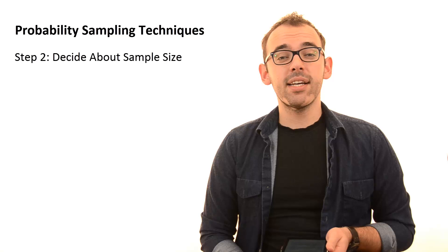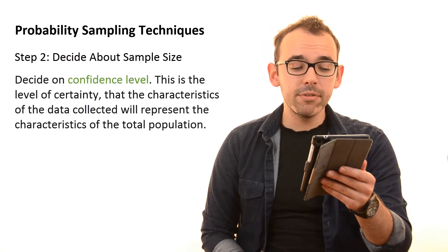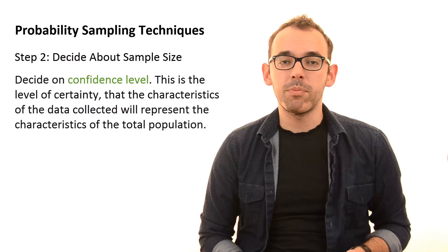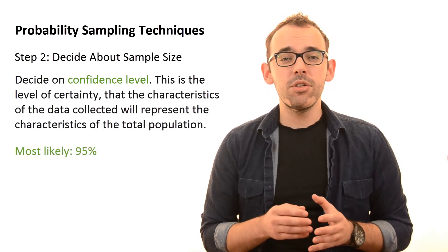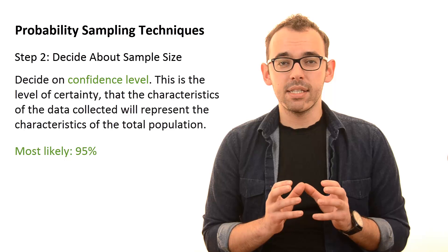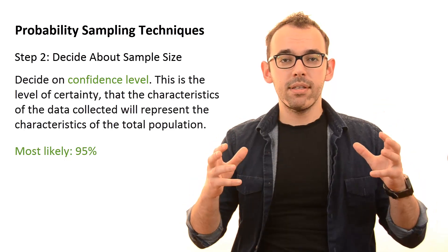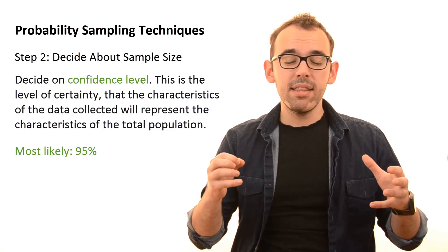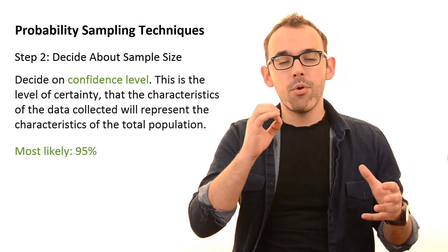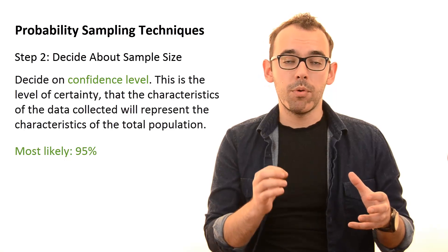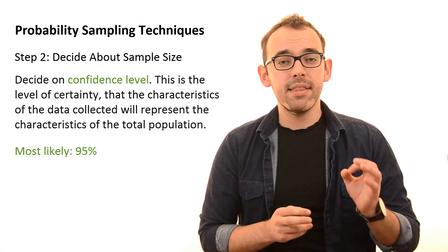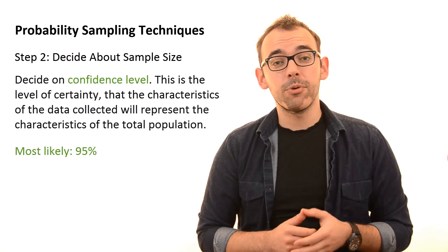First, you need to decide about what we call a confidence level. This is the level of certainty that the characteristics of the data collected will represent the characteristics of the total population. Let's say that your confidence level is 95 percent. This simply means that if you would select 100 cases into your sample, at least 95 of these cases will really represent the whole population. In most cases, researchers go for 95 percent confidence level, and that is also what you should go for.